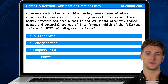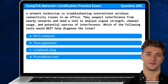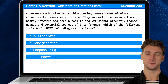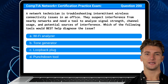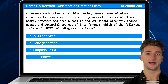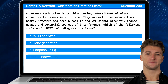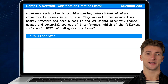Question 200: A network technician is troubleshooting intermittent wireless connectivity issues in an office. They suspect interference from nearby networks and need a tool to analyze signal strength, channel usage, and potential sources of interference. Which of the following tools would best help diagnose the issue? The answer is A: Wi-Fi analyzer.